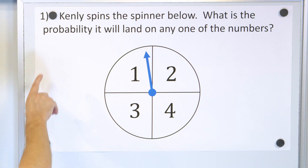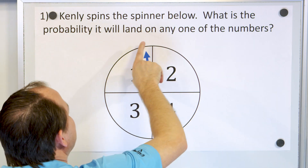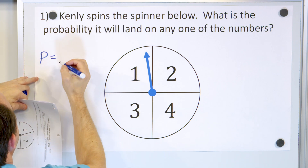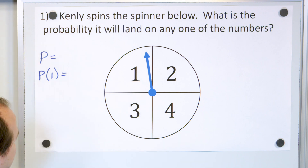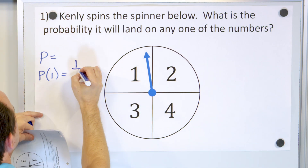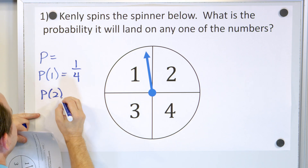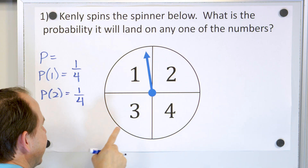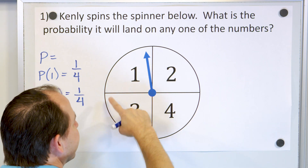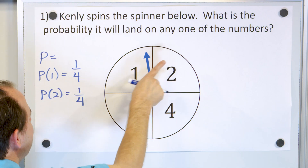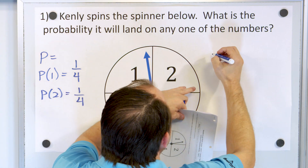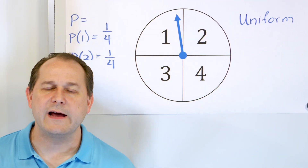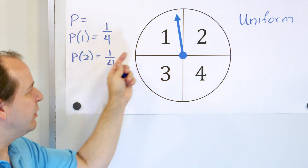Problem 1: Kenley spins the spinner below. What is the probability that it will land on any one of the numbers? The probability of landing on the number one is one possible outcome out of a total of four — one fourth. The probability of landing on a two, three, or four is also one fourth each. So the probability of any one of these outcomes is exactly the same, which means this is a Uniform Probability Model, like flipping a coin or rolling a die. All outcomes have exactly the same probability: one fourth.